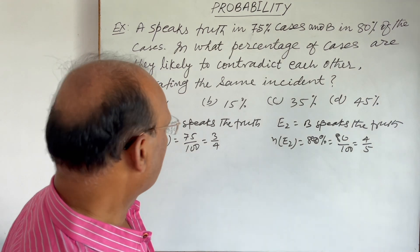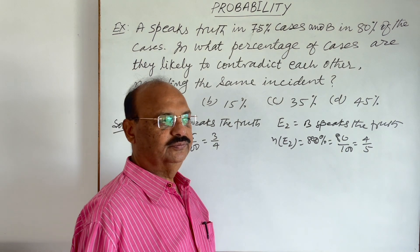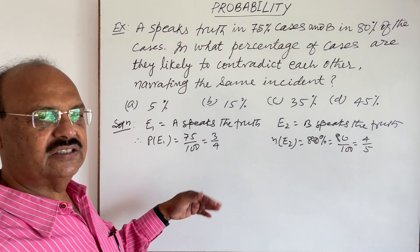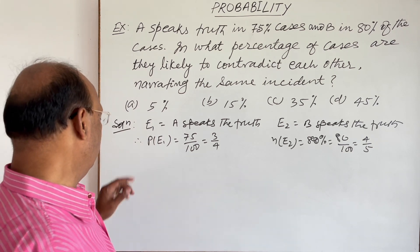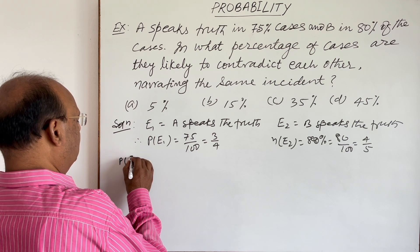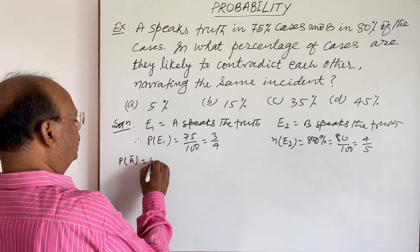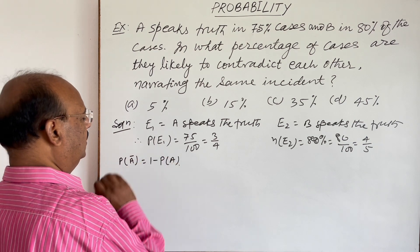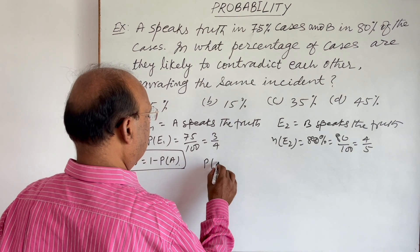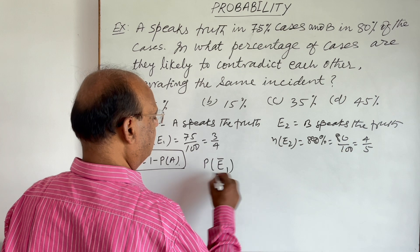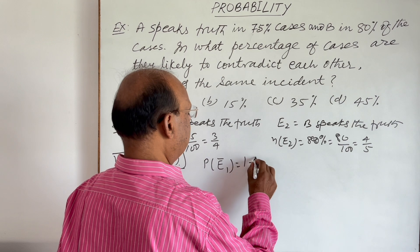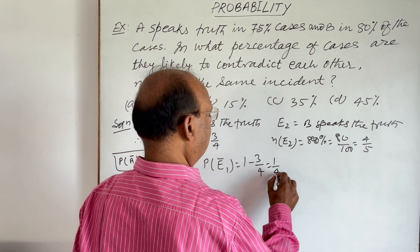Here we need to find out when A is not speaking truth, means he is telling lie. So we need to know a formula here that if we have to find out probability of not A, this is equal to 1 minus probability of A. Using this formula, we can write that probability when A is not speaking truth, P(not E₁), is equal to 1 minus 3 by 4, and this is equal to 1 by 4.